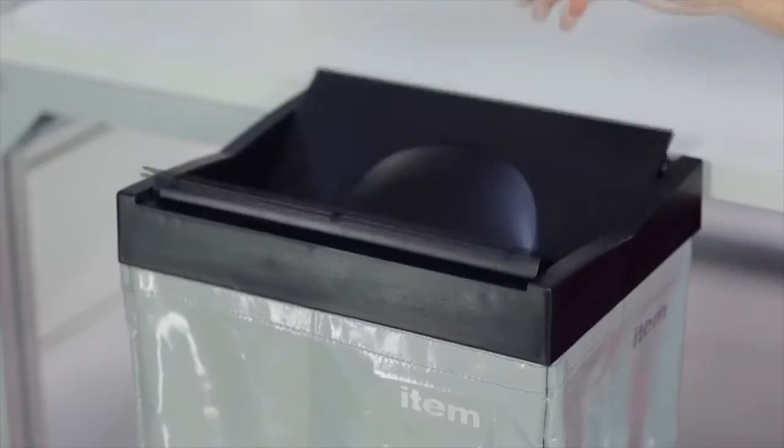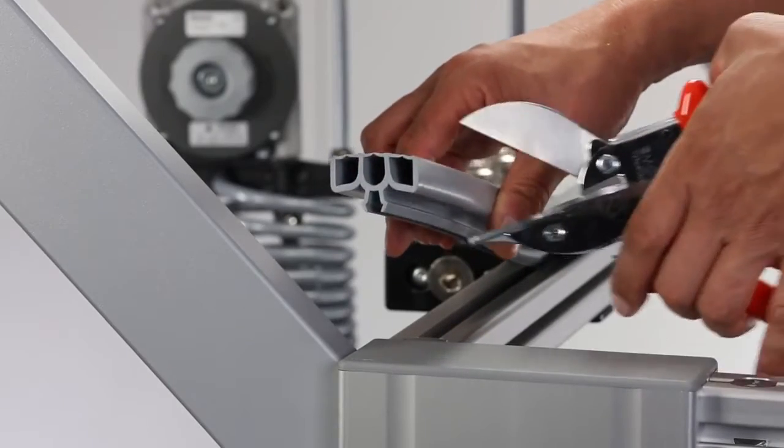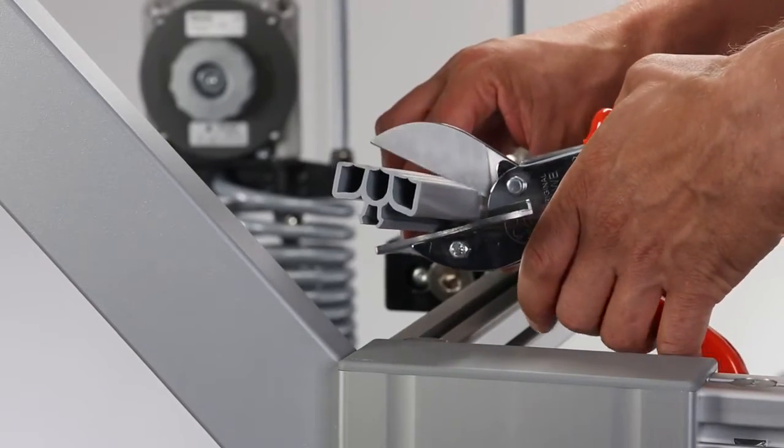Always within easy reach, the waste bin with self-opening lid helps keep things clean and tidy. The quickest cable conduit ETHEM has to offer, cable guide profile 8, 40x16, also keeps things neat.